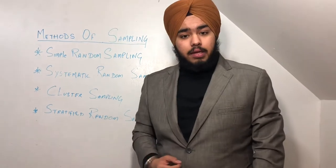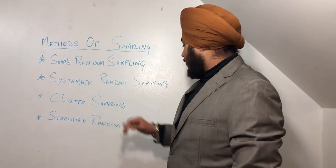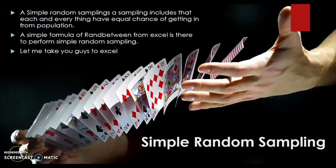Simple random sampling is a method where each and everything has an equal chance of getting selected from the population. You can use RANDBETWEEN in Excel to show the observation. Let me take you guys to Excel.